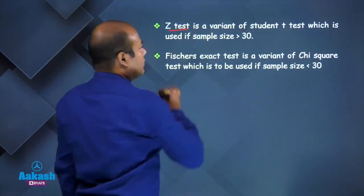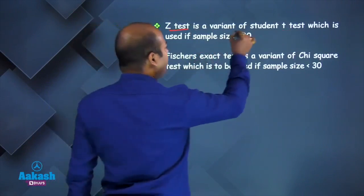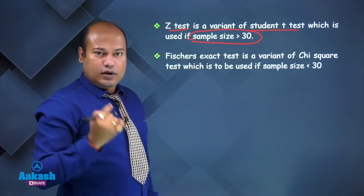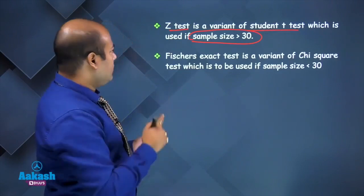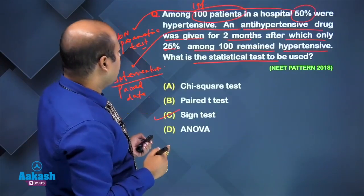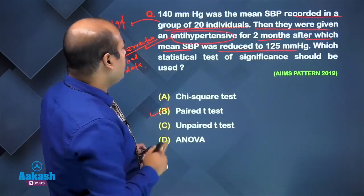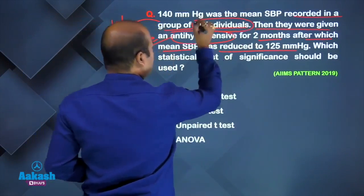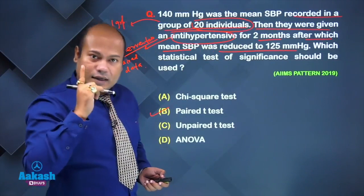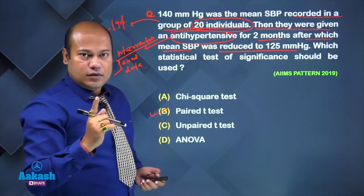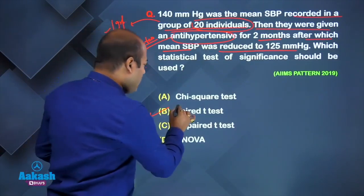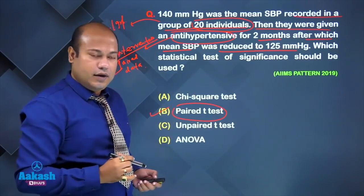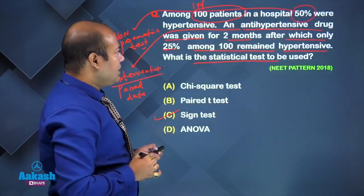Remember that the z-test is a variant of the student t-test. It is used if the sample size is more than 30. In the previous example the sample size was 20 individuals — less than 30 — which is why we used the paired t-test and not the z-test.